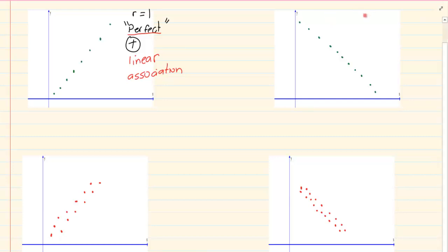Now if you were going to describe this one, this one here R is going to equal to negative 1. And what would it be? It's also perfect because if I had to draw the line it would go quite perfectly down. So it's perfect but it's negative linear meaning it's a straight line association.